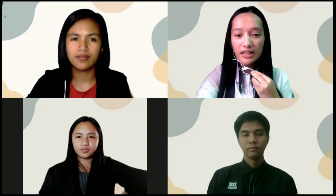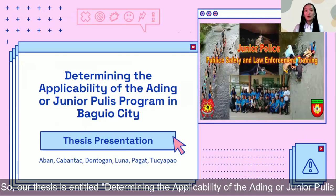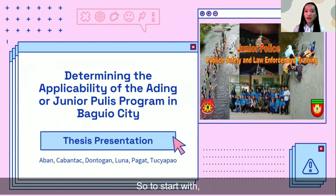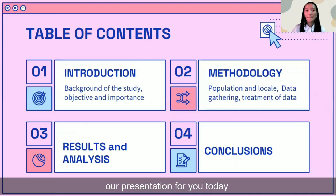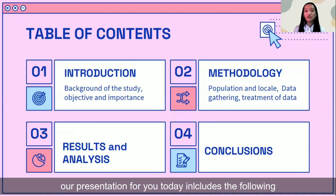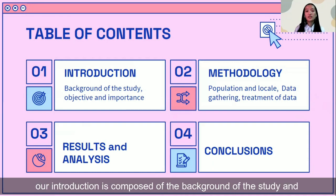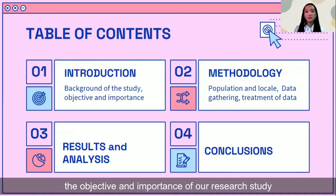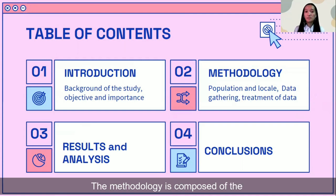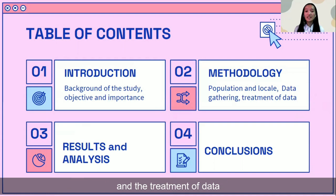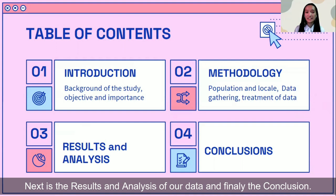Our thesis is entitled: Determining the Applicability of the IBEAM Ordinary Police Program. Our presentation today includes the following: We will start with the introduction, which is composed of the background of our study and the objective and importance of our study. Followed by the methodology, which covers the population, the data gathering procedure and tools, and the treatment of data. Next is the results and analysis, and finally, the conclusion.